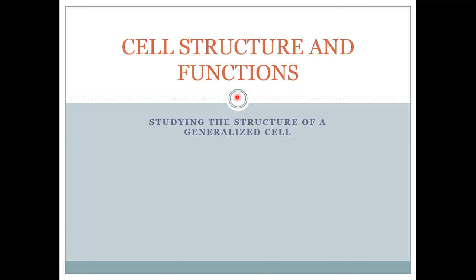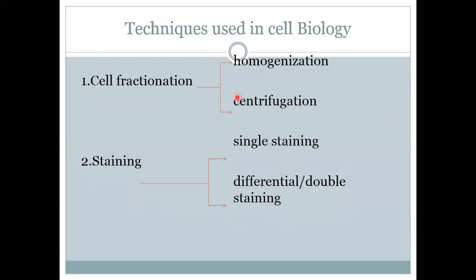The first procedure is Cell Fractionation. Cell Fractionation means to divide or to break up cells. It has two steps: one is called homogenization and the other one is called centrifugation. Cell Homogenization is the formation of a homogeneous mass of cells resulting in cell suspension. Centrifugation is the separation of substances on the basis of their size and densities by applying centrifugal force.